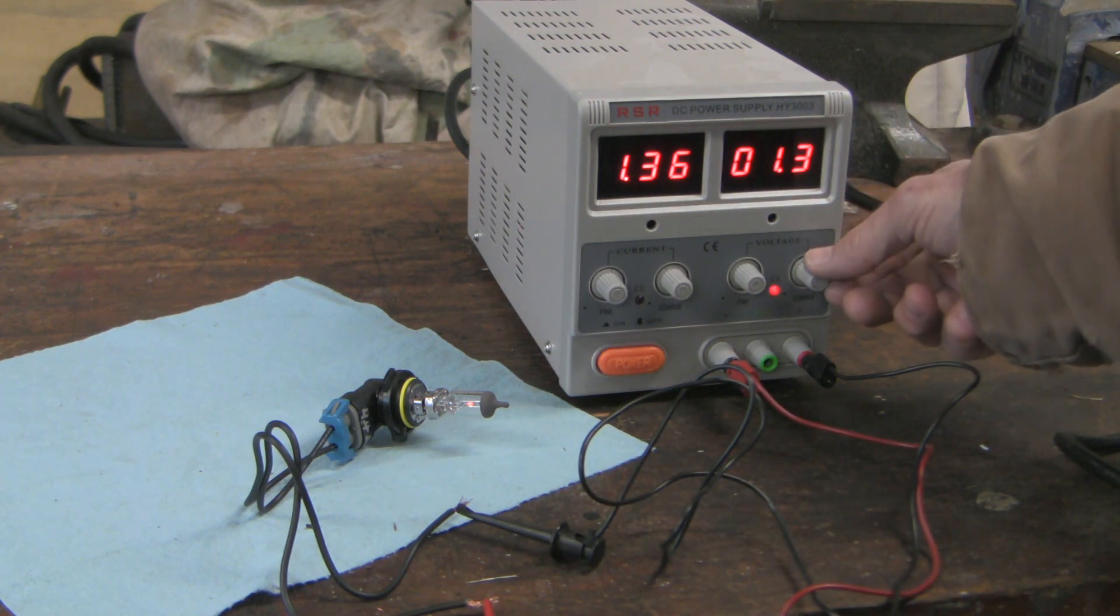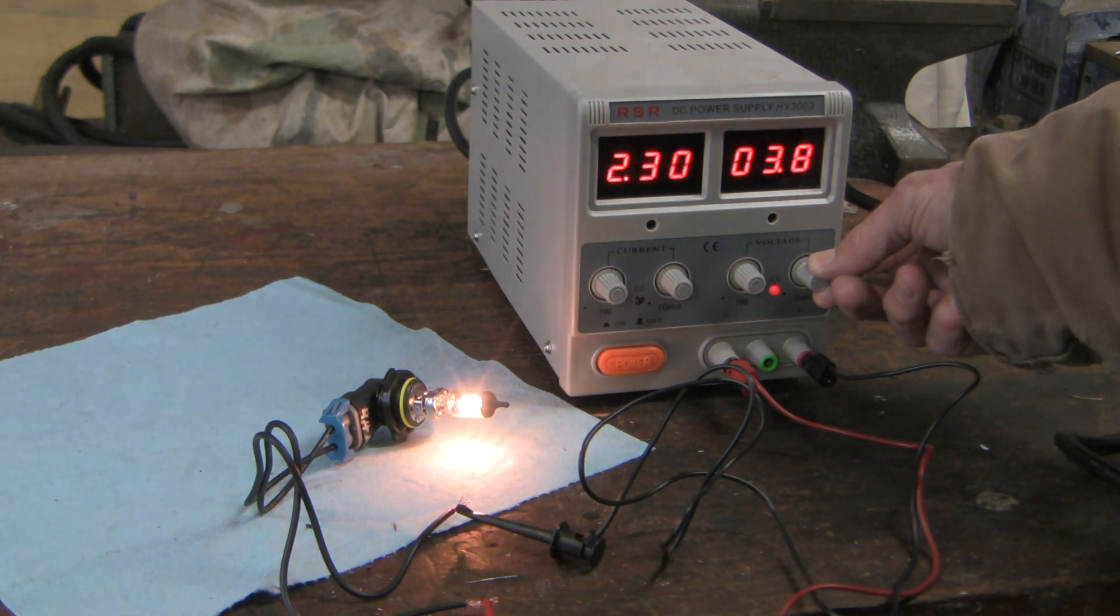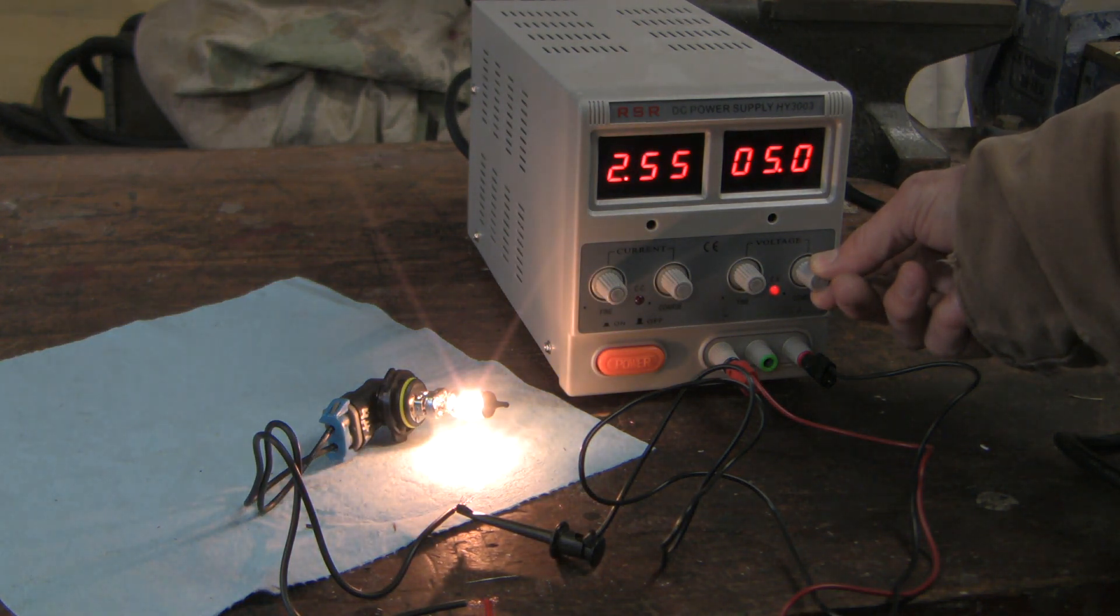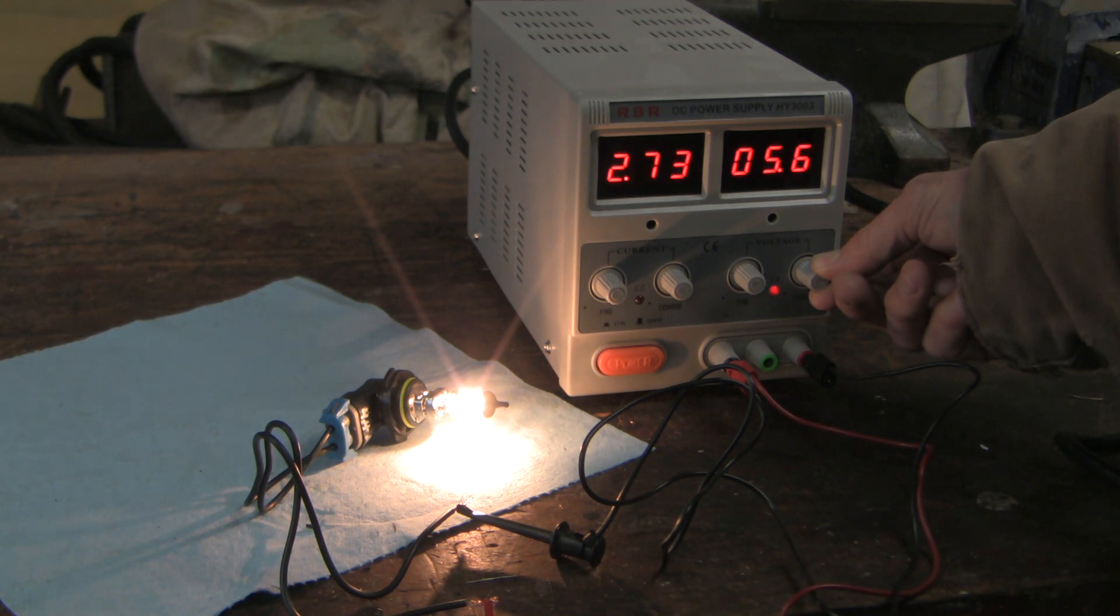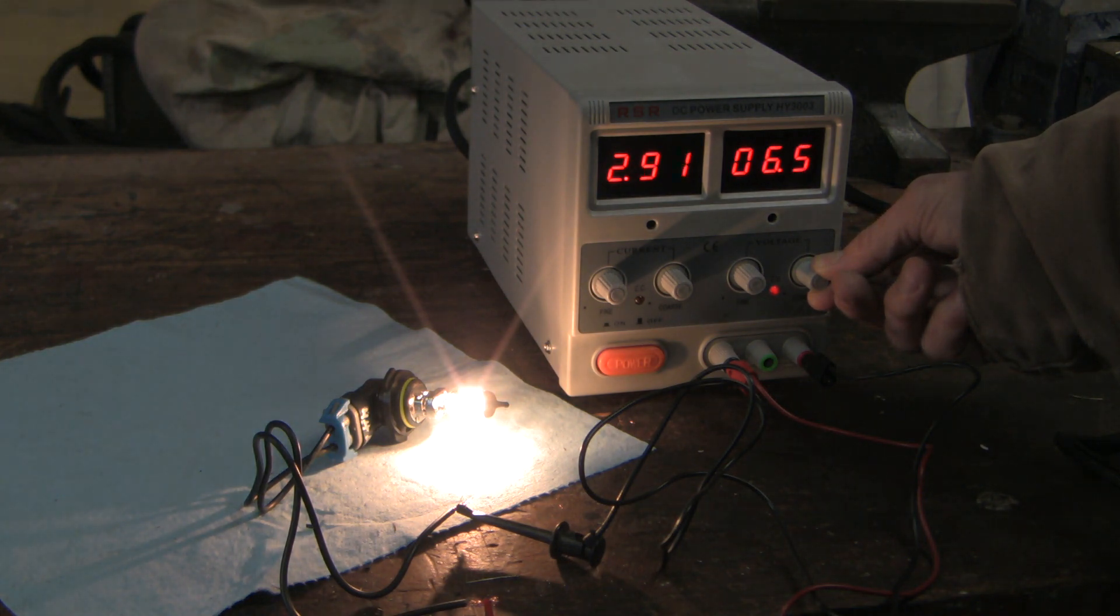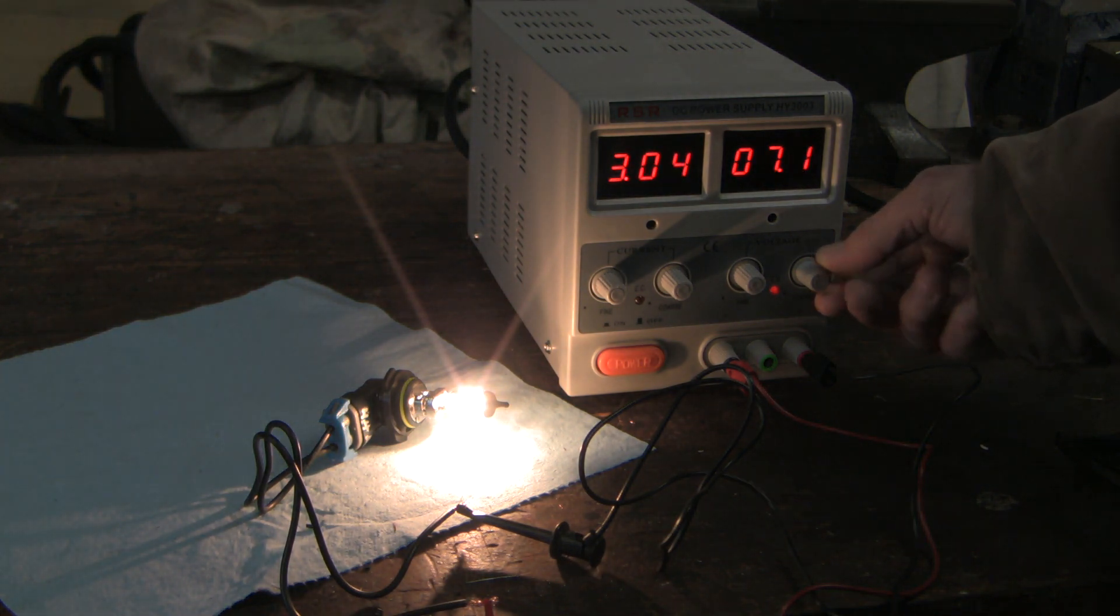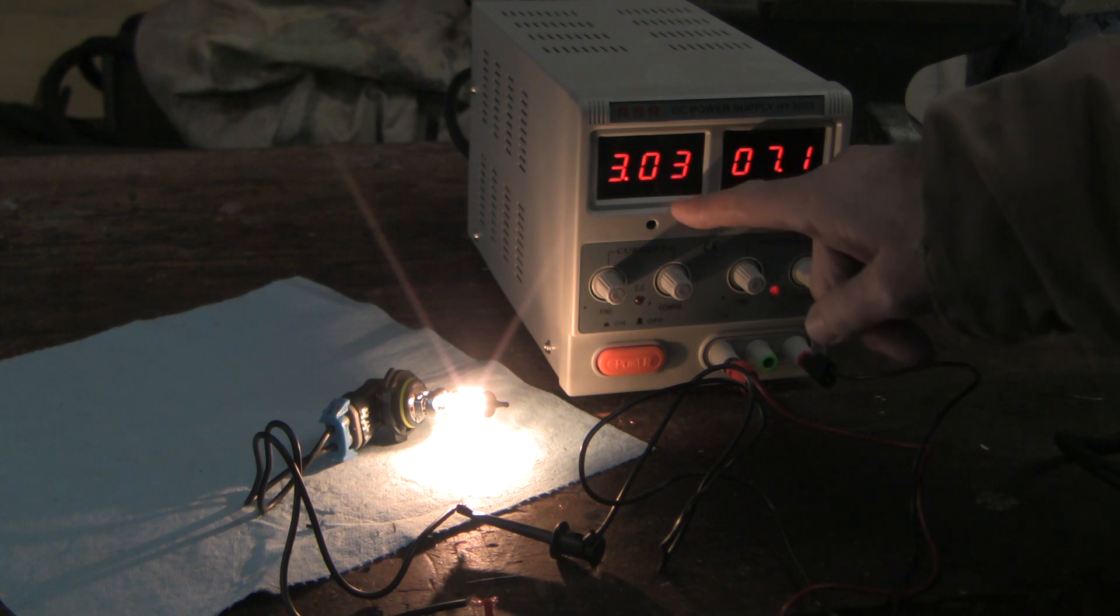We've got about 1.3 amps flowing and as I gradually increase the voltage we get an increase in brightness which is what we want. We want to be able to see that subjective change. Now here we're about 7 volts and we've got about 3.0 amps flowing.